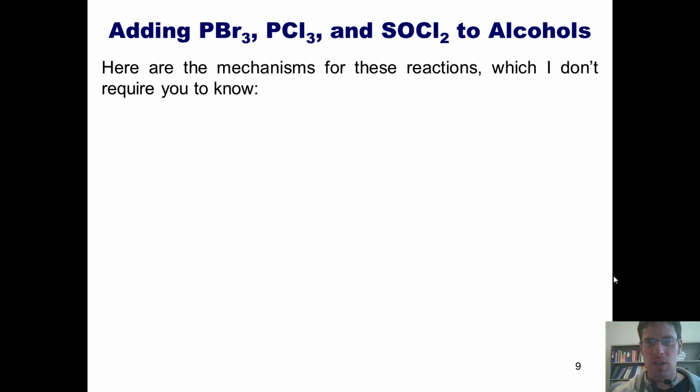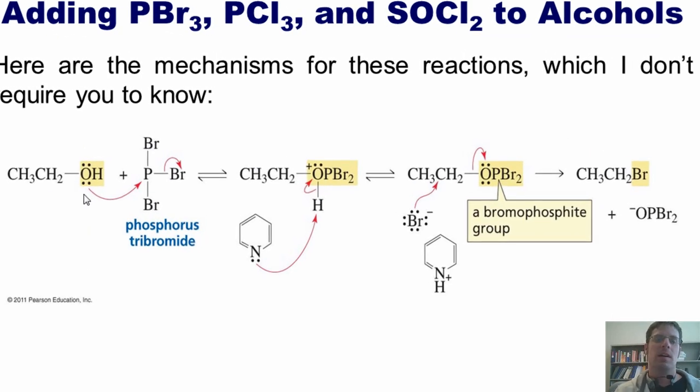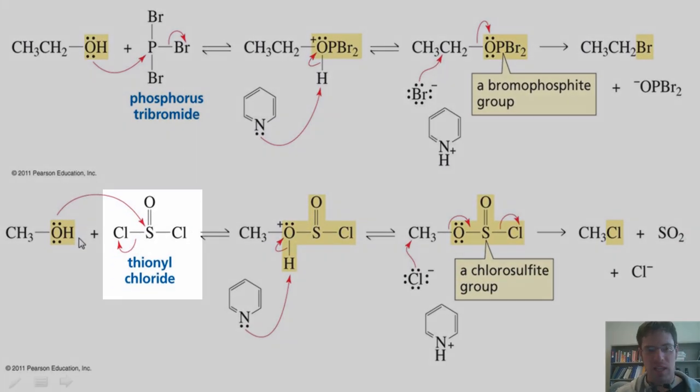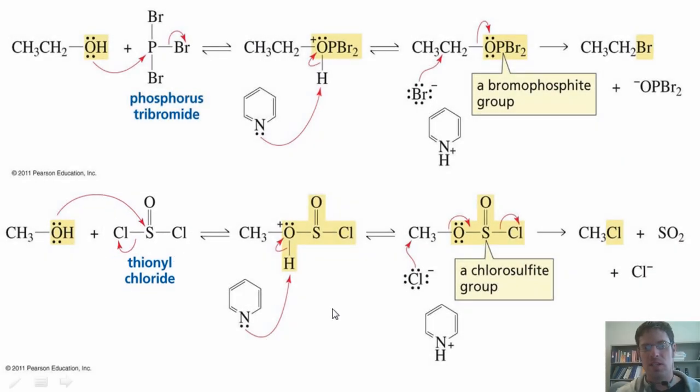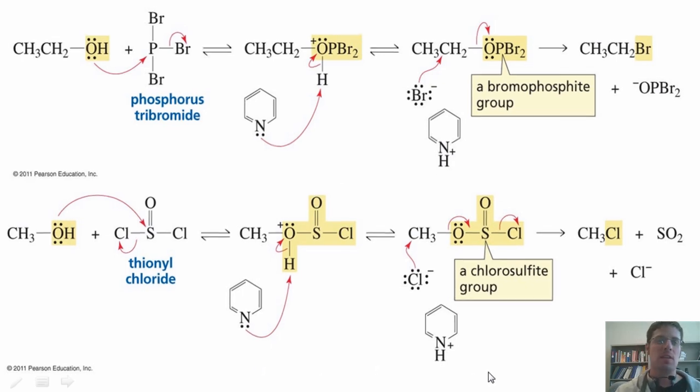So here are the mechanisms of those reactions, which I do not require you to know, and I'm not going to go through. I am going to show them to you just in case you want to look at them. In the case of PBr3, the alcohol's lone pair goes into the phosphorus, kicks off a bromide, and gives us this intermediate. This molecule right here, which is called pyridine, strips that proton to give me this intermediate, and then an attacking bromide displaces it to give me my final product. With SOCl2, which looks like this, the oxygen undergoes this type of reaction mechanism. Once again, pyridine, the six-membered ring that has a nitrogen, is involved.